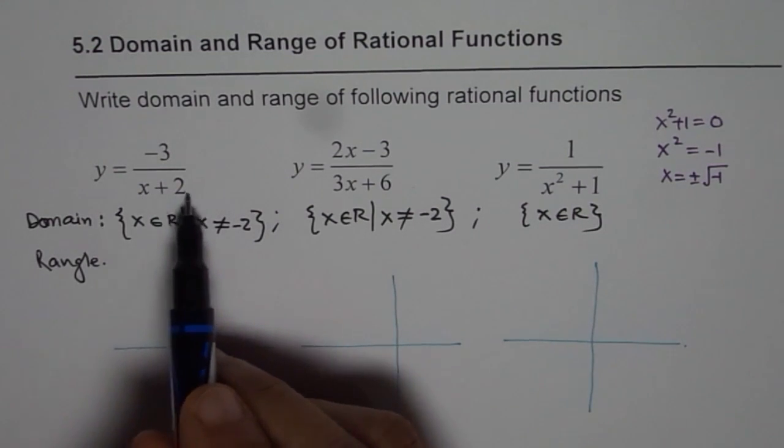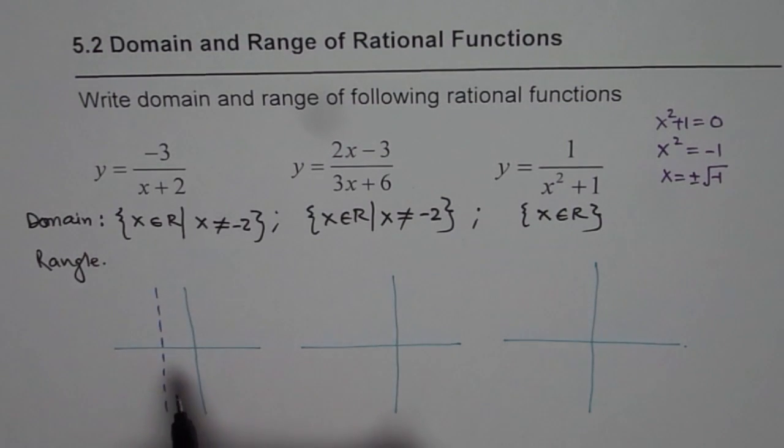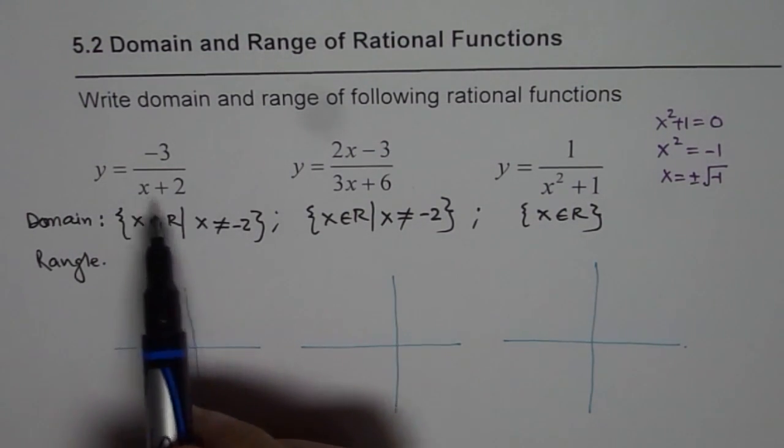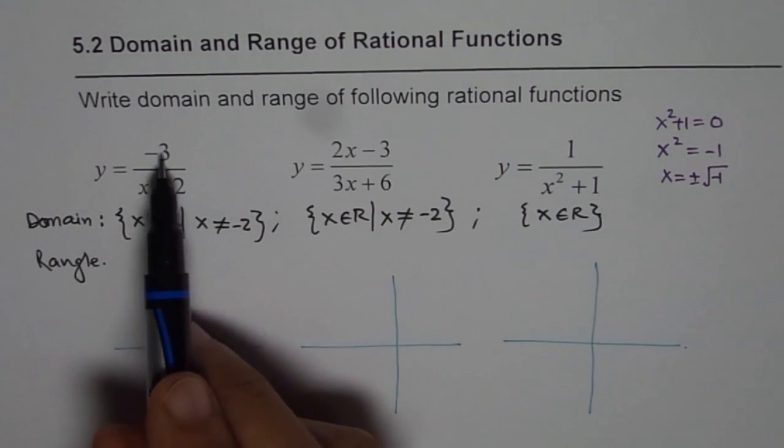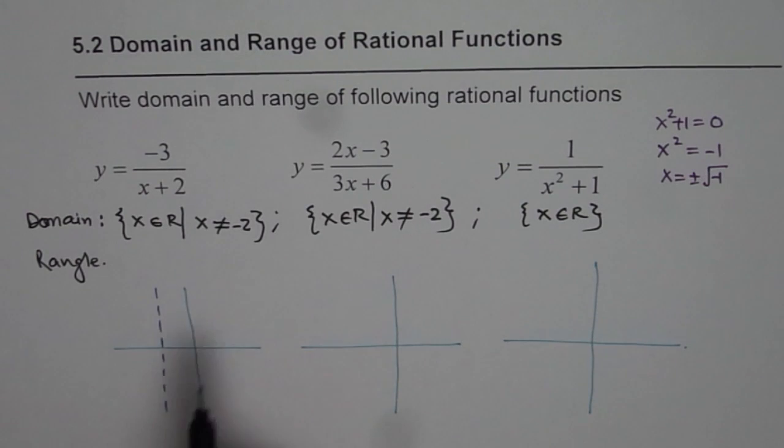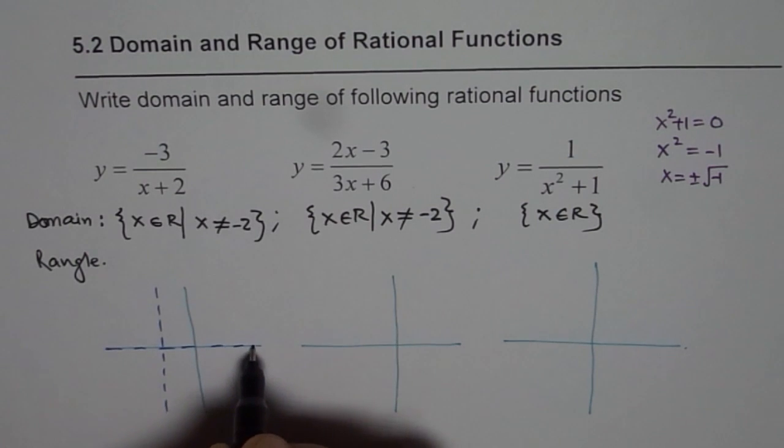So x plus 2, x is 0 at minus 2. So we have a vertical asymptote at minus 2. And we know that we have a horizontal asymptote. Since if x is large, something over large will be 0. So we have a horizontal asymptote, which is our x axis itself.